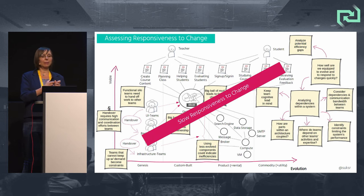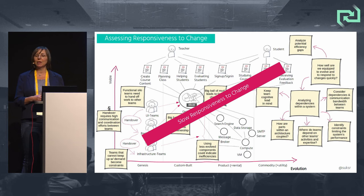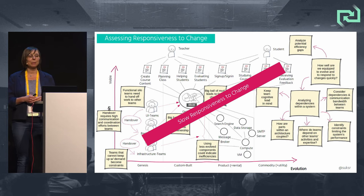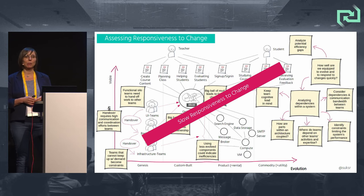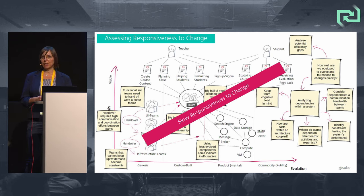Tightly coupled architecture, high team cognitive load, functional silo teams with handovers, high communication and coordination efforts, delivery bottlenecks, and efficiency gaps — that is not very responsive to change. That leads to a system poorly equipped to respond to changes quickly and absorb changes gracefully. So to increase our responsiveness to change, we need to optimize our system for fast flow of change.